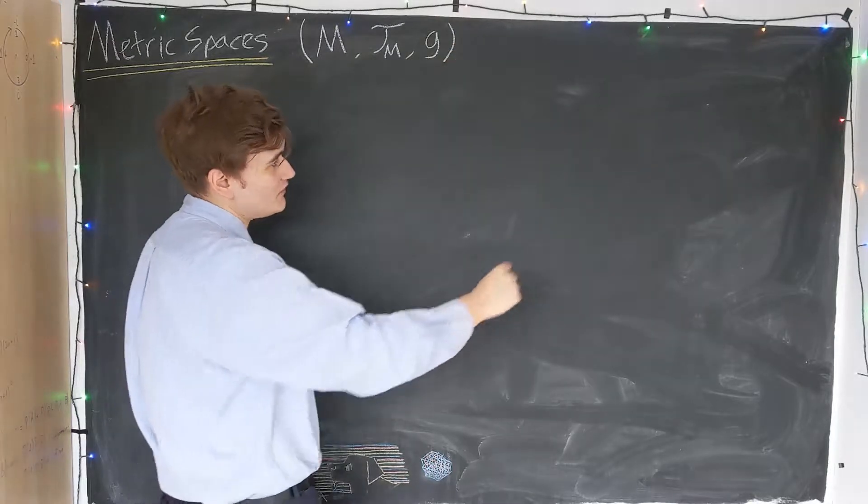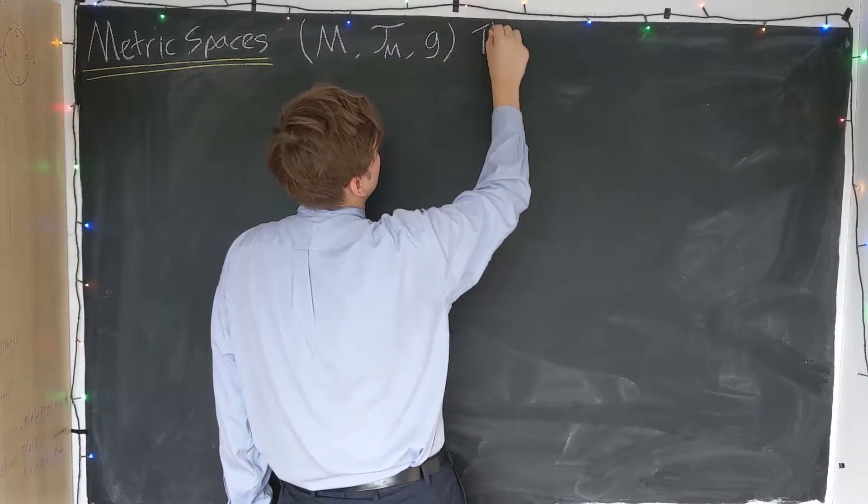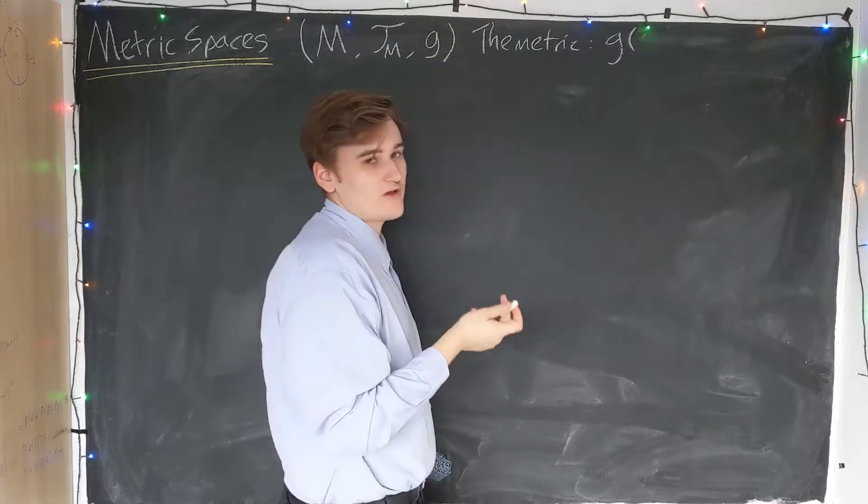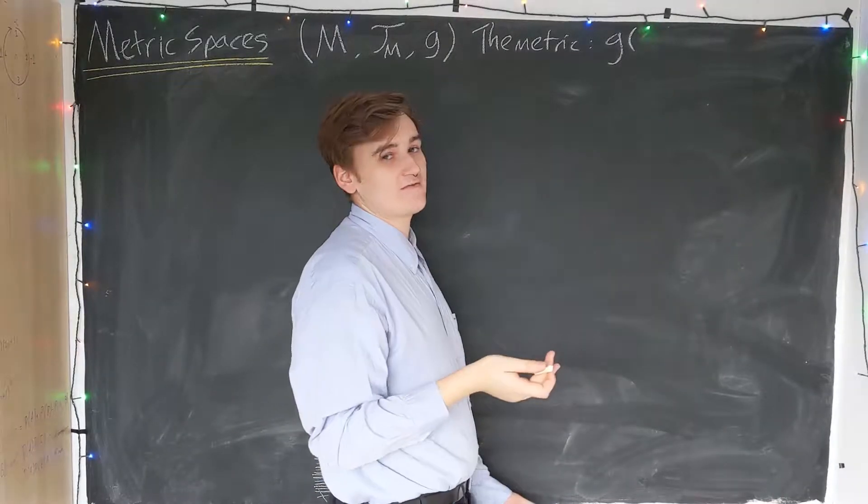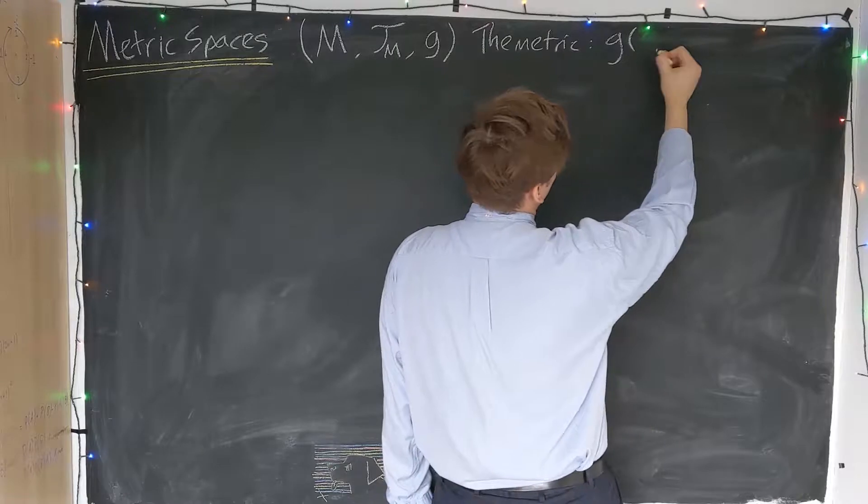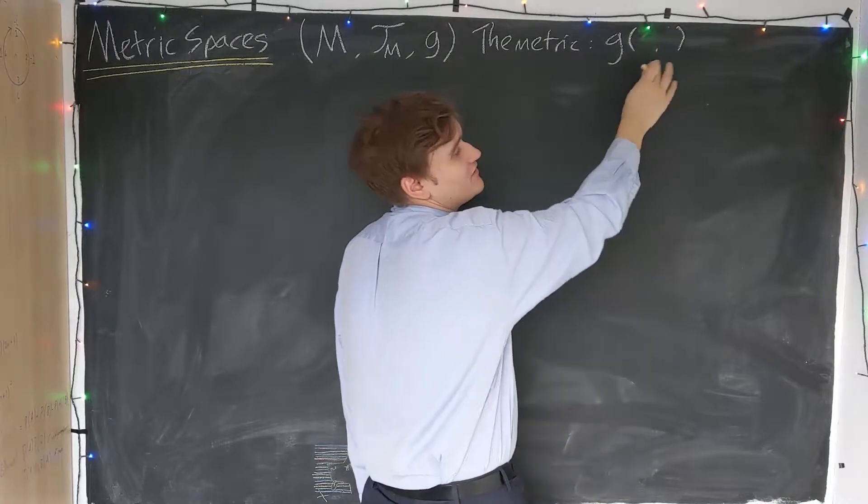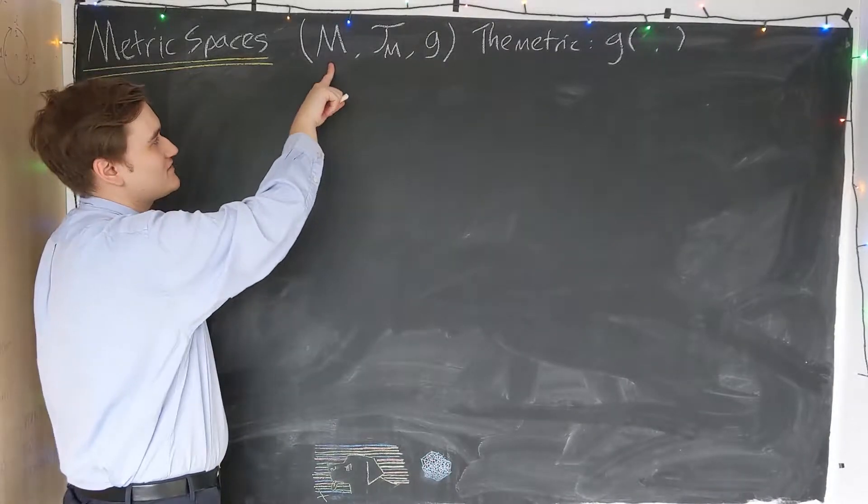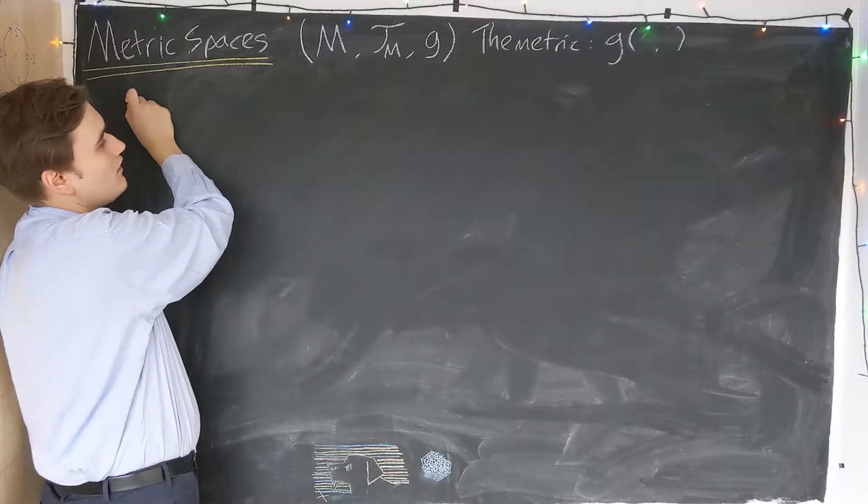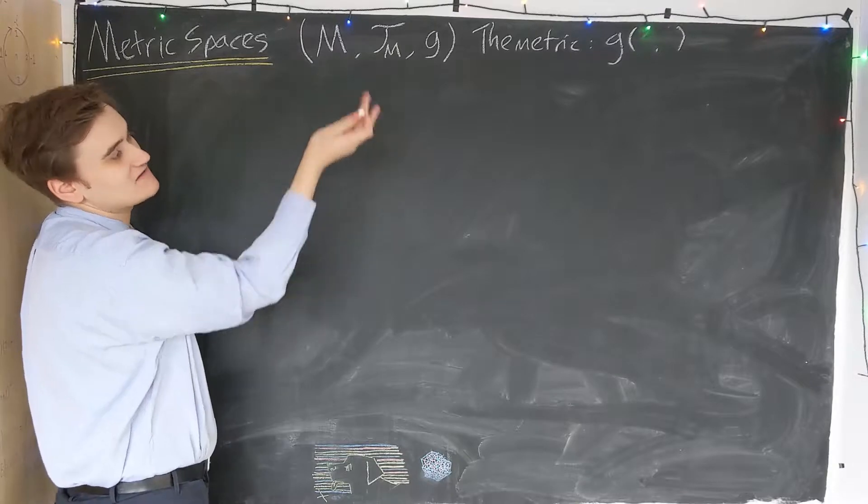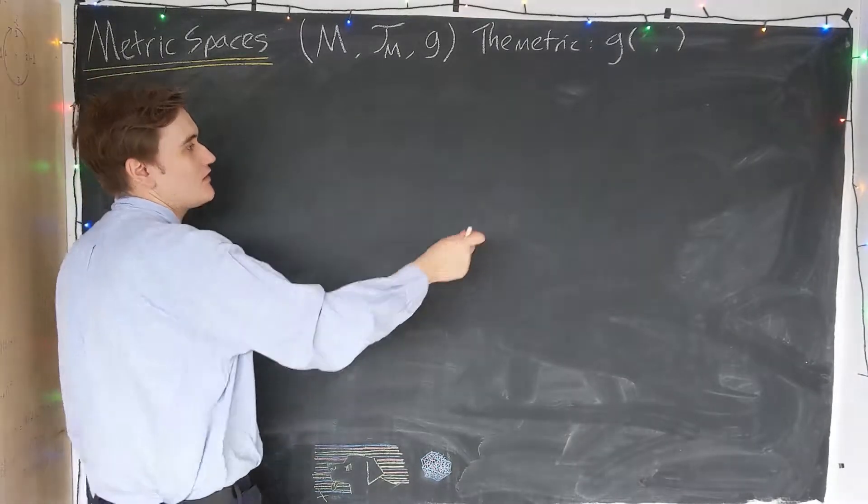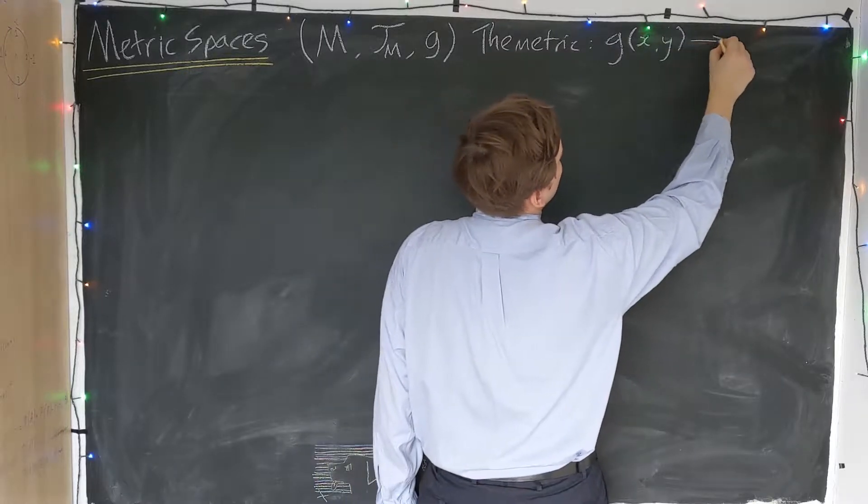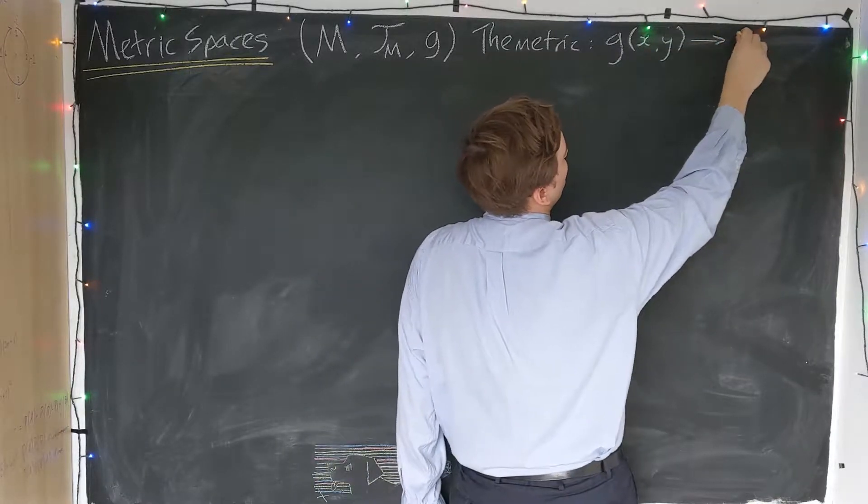The metric G is what we call a symmetric bilinear form, which is simply a function of two arguments. If we take two points in our set M, I'll call them x and y, we can plug those two points into the metric, and this gives us some real number.